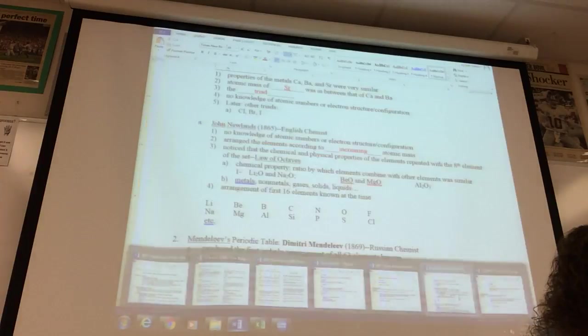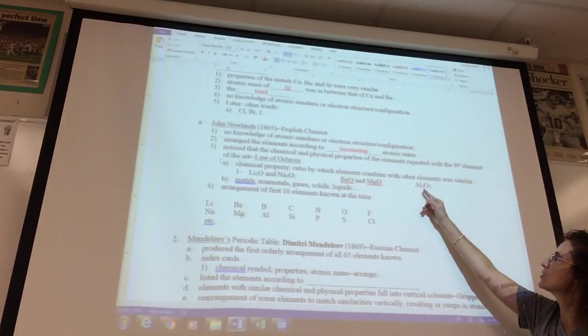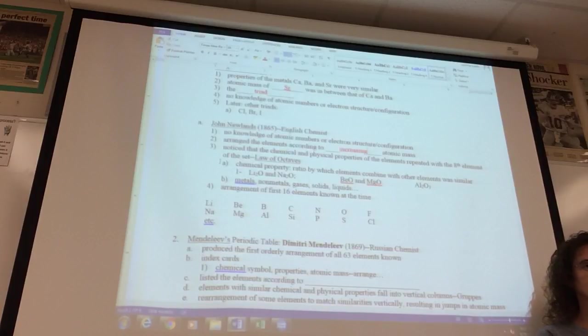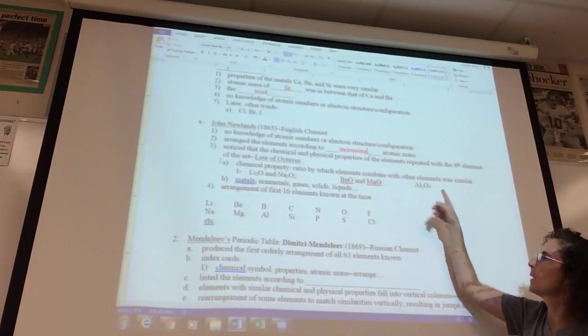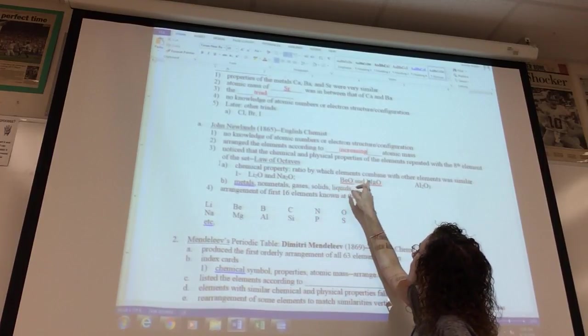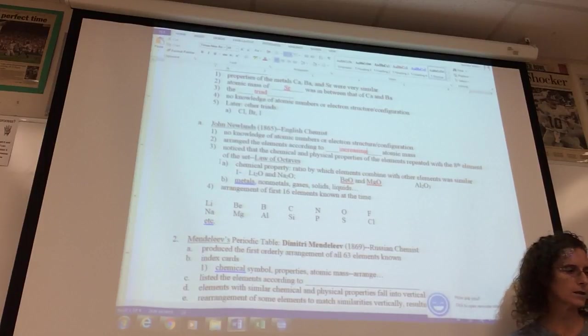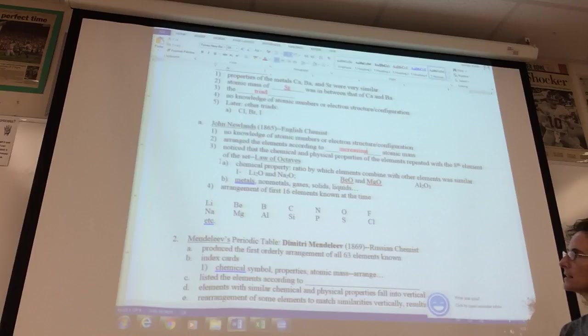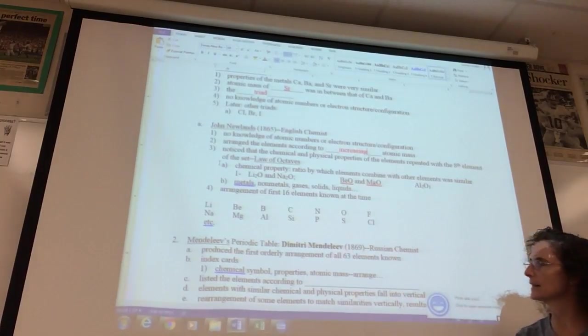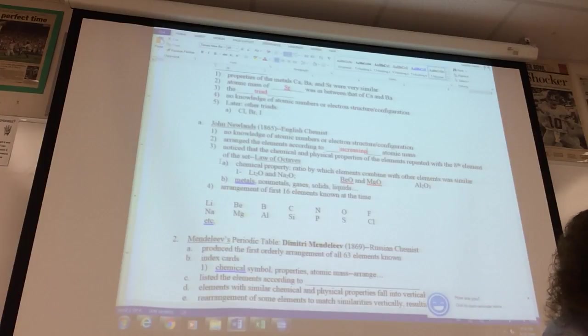Beryllium and magnesium would react with oxygen in a 1 to 1 mole ratio. Beryllium and magnesium are in the second column of the periodic table. When elements were put underneath one another, they had similar chemical properties. They also had similar physical properties. When aluminum combined with oxygen, it did so in a 2 to 3 ratio. We'll talk about where those numbers come from in the next chapter when you learn how to write chemical formulas. This is the arrangement of the first 16 elements.